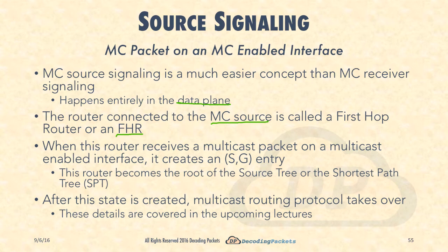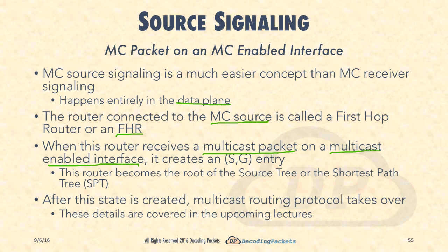When this router receives a multicast packet — that is literally the qualification. You receive a multicast packet on a multicast-enabled interface, meaning any interface that runs a multicast routing protocol. Once you receive a packet on it, you now have the S and you have the G, and you can create an S,G entry.